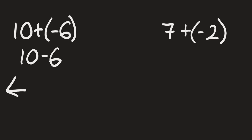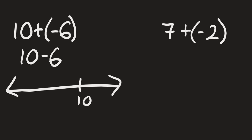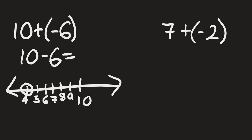10 minus 6 — we're going to start off at 10 and we're going to go 6 units to the left — 9, 8, 7, 6, 5, 4. 10 minus 6 is 4.